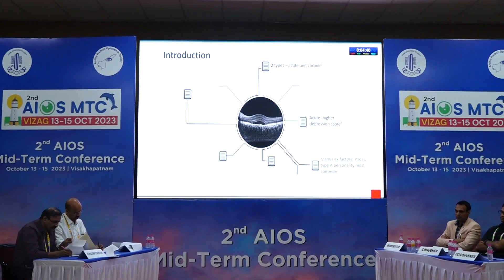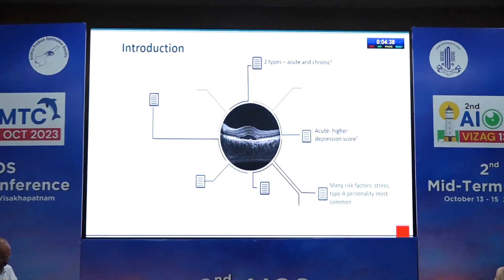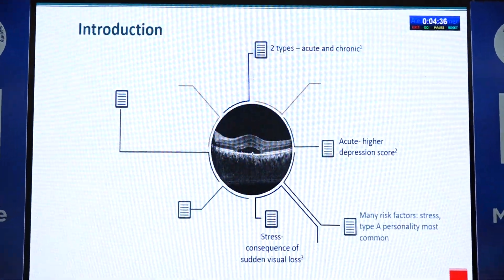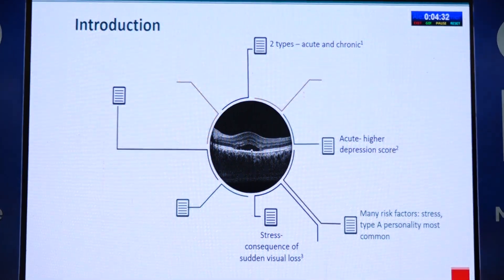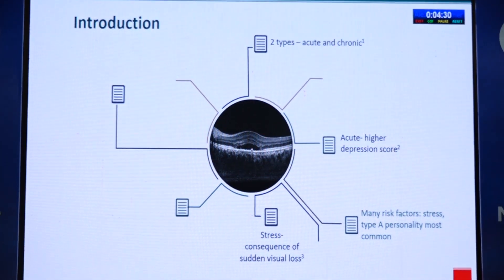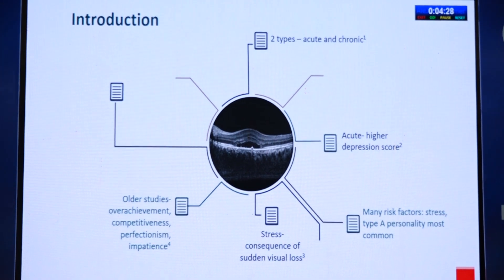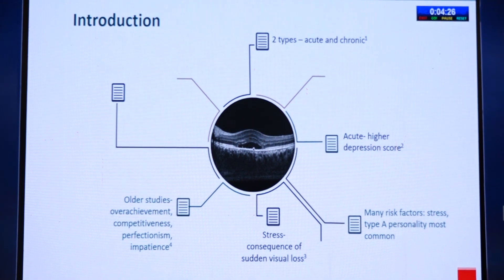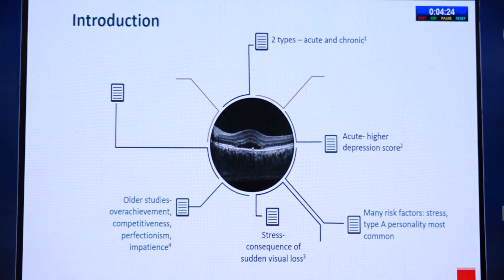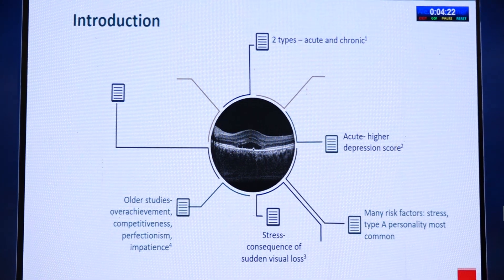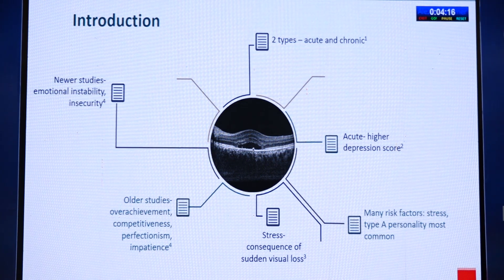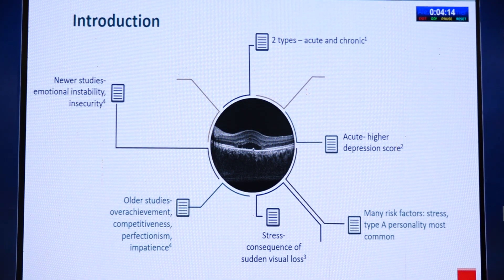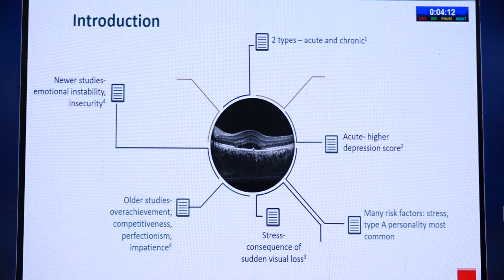Many risk factors are involved, but stress and Type A personality are most common. Stress can also be a consequence of sudden visual loss, which leads to considerable psychological distress. Older studies state that personality characteristics like overachievement, competitiveness, perfectionism, and impatience are related to stress and CSCR, whereas newer studies state that emotional instability and insecurity are related to CSCR and stress.